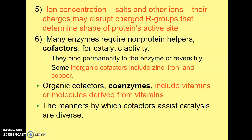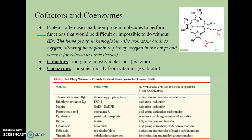Another factor that can affect the reaction rate is that many enzymes — not all of them, but some — do require a helper, and it's a non-protein. It can be inorganic or organic. If it's an inorganic non-protein helper, we call that a cofactor. The heme of hemoglobin would be considered a cofactor, and they bind permanently or reversibly to the enzyme. We also have organic cofactors, and those are called coenzymes. Coenzymes are usually derived from vitamins, such as vitamin B12 or biotin. The manners by which cofactors assist the catalysis are very diverse, depending on the cofactor and the enzyme.